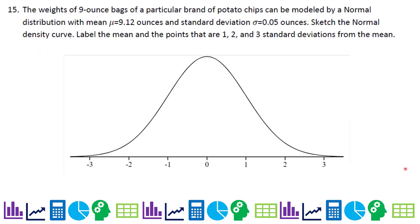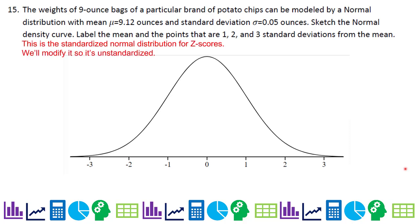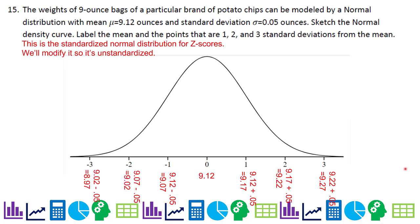Number 15: the weights of 9-ounce bags of potato chips are normally distributed with a mean of 9.12 ounces and a standard deviation of 0.05 ounces. Sketch the normal density curve and label the mean and points 1, 2, and 3 standard deviations from the mean. You could plug these into Statlet for the full model. Going manually, place the mean at center and fill in one, two, and three standard deviations above and below. The answer is graph C on the multiple choice.